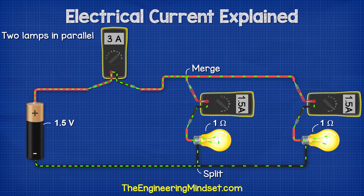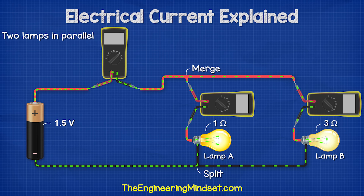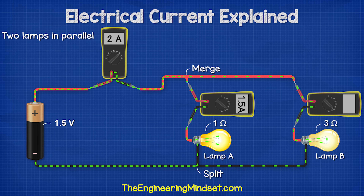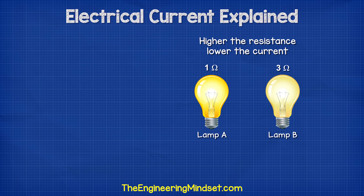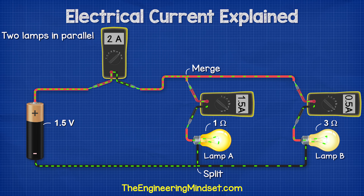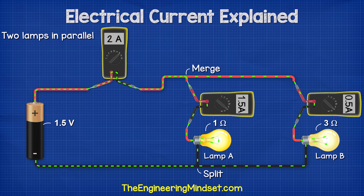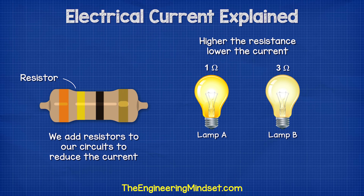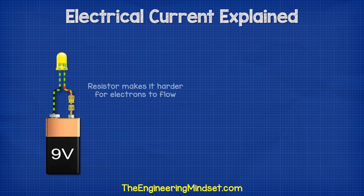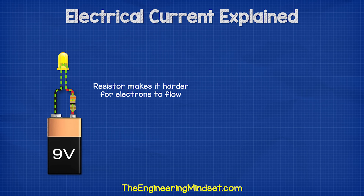Because both lamps have the same resistance, they have the same current. But for example, if lamp A has a resistance of 1 ohm and lamp B has a resistance of 3 ohms, then in the main wire we get an amp reading of 2 amps, in the branch for lamp A we get 1.5 amps, and in the branch for lamp B we get 0.5 amps. Notice though that lamp B is dimmer, because the resistance is higher, which makes it difficult for electrons to flow through. In both cases, the amps in the branches all add up and are equal to the total current flowing in the main wire to and from the battery. Therefore, we can add resistors to our circuits to restrict how much current can flow — resistors make it harder for electrons to flow through a circuit, and that's why we add them, because they reduce the current.